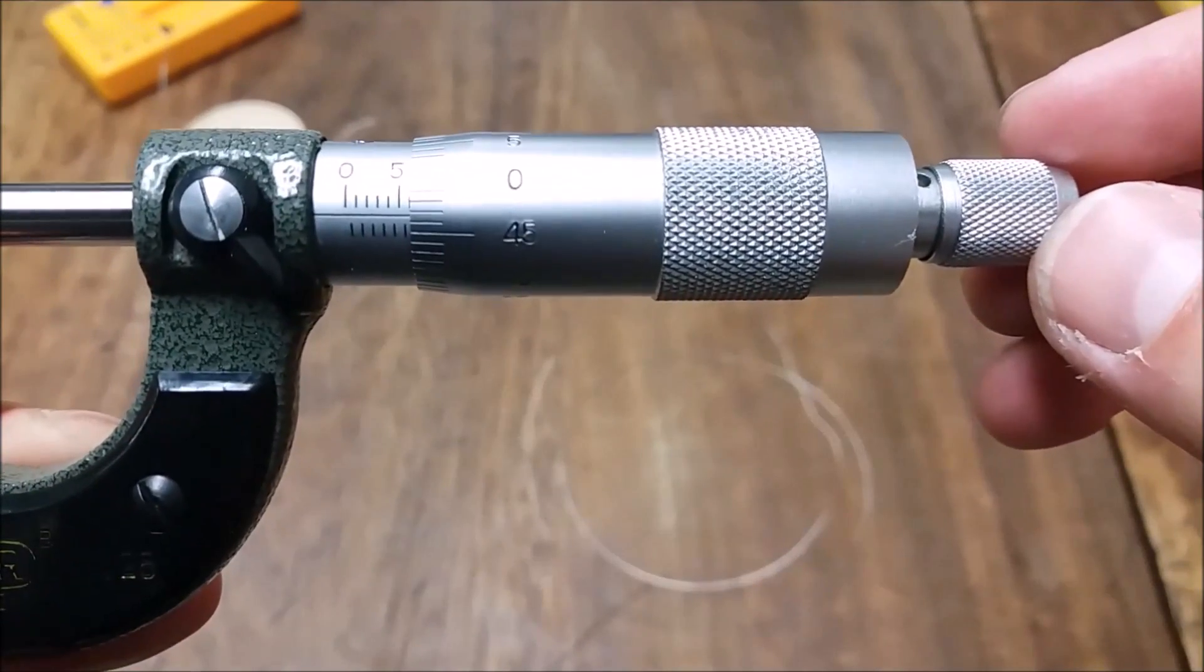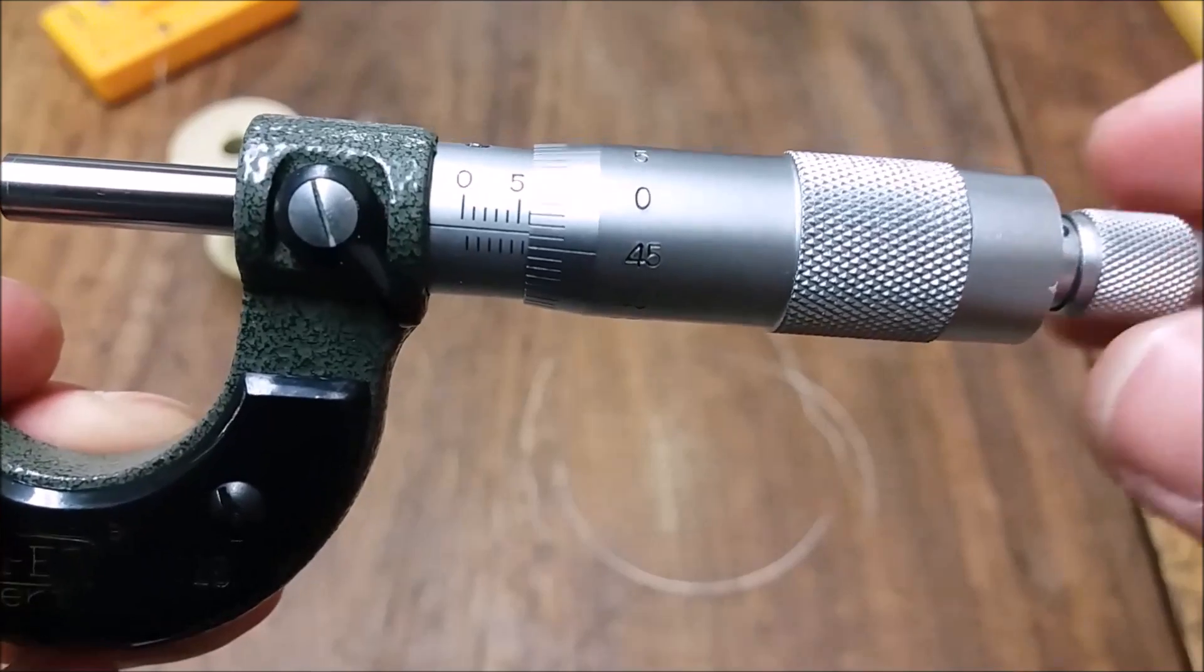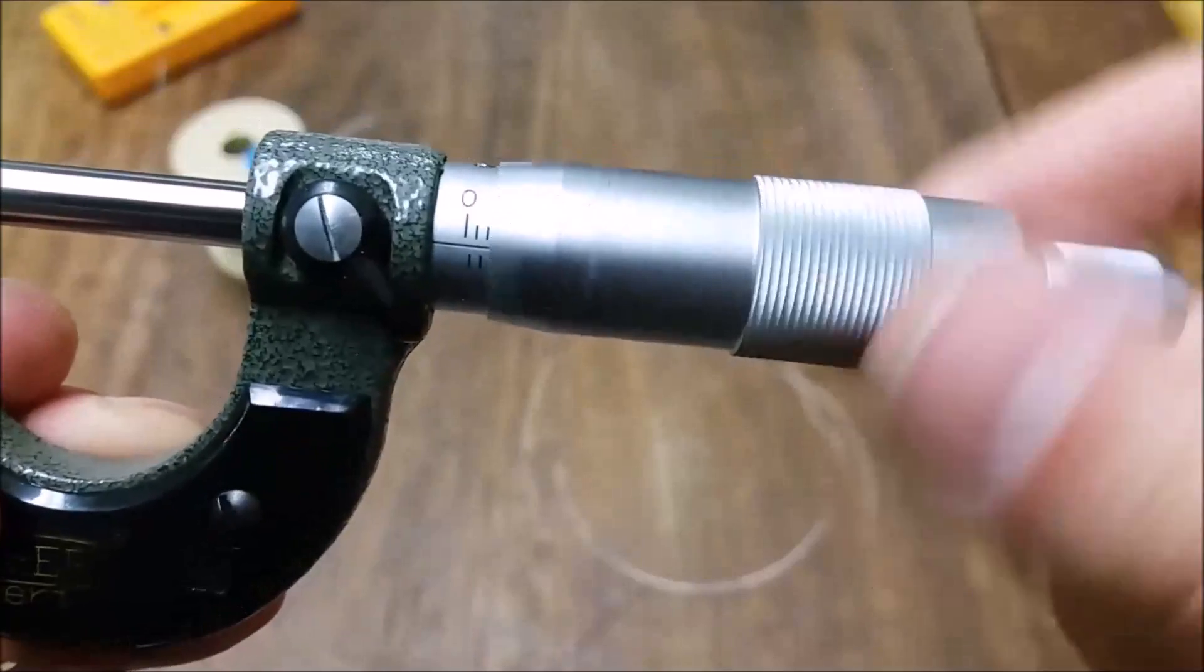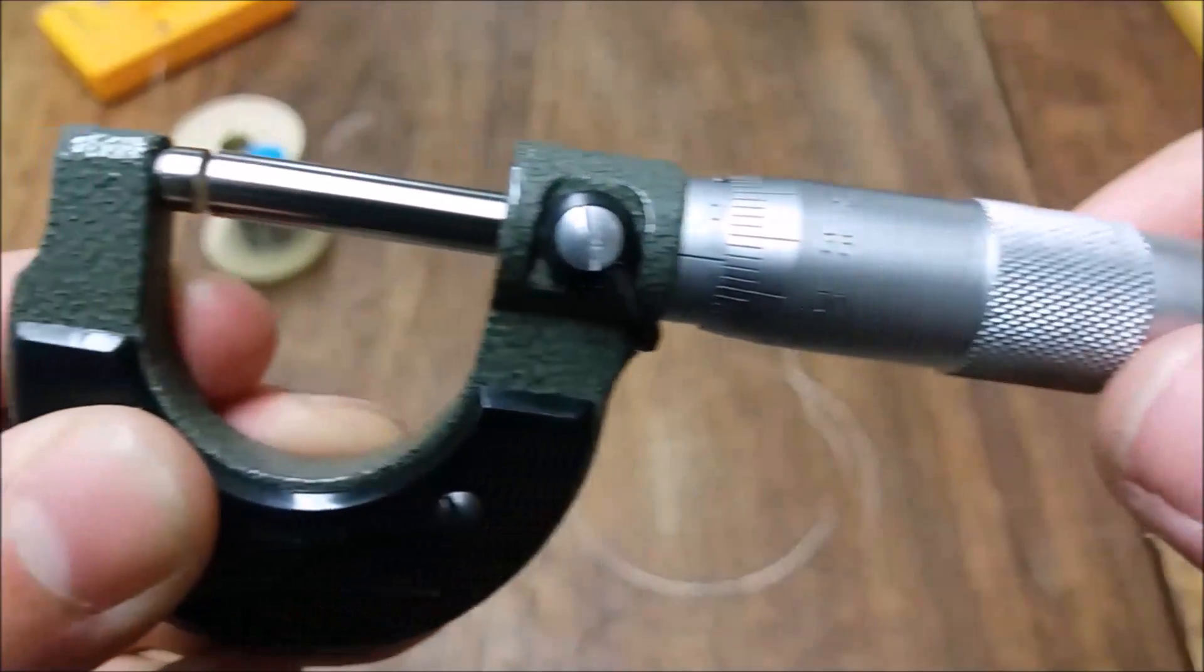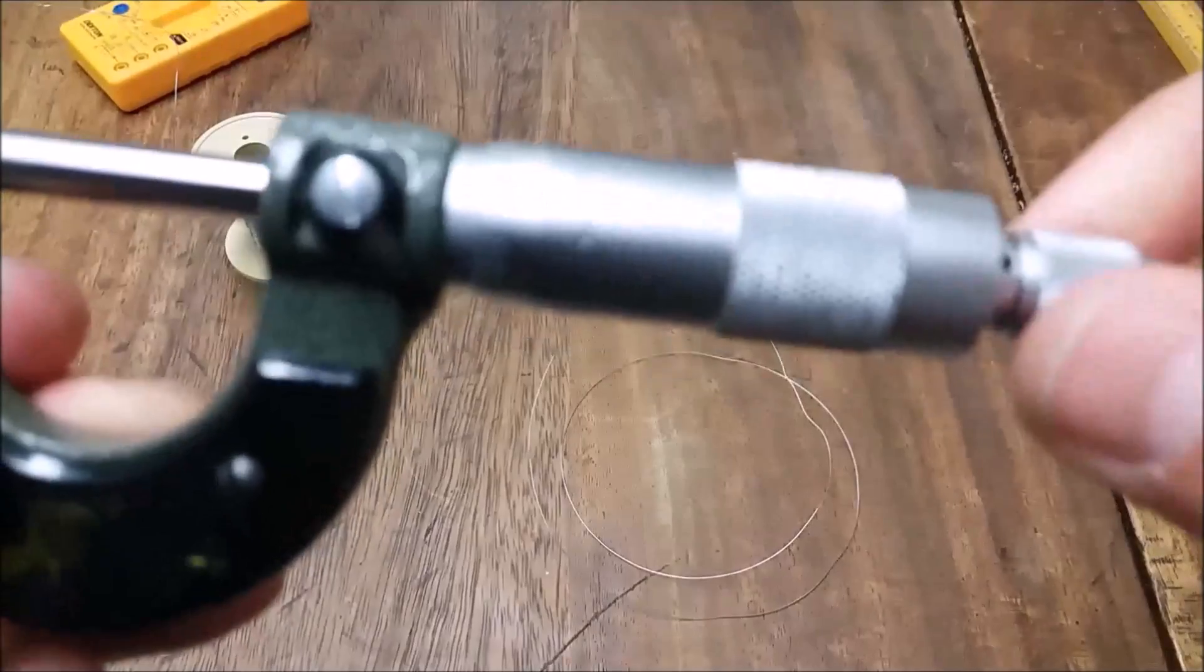The first thing you want to do is make sure that it's calibrated. So basically, when you read zero, it's actually zero. For large measurements, or large changes rather, you can use the big wheel here because it's faster. But when you get closer to actually closing the gap, this one here, you'll want to start using the ratchet wheel on the other side. There we go.